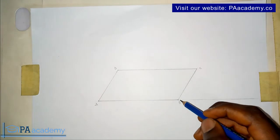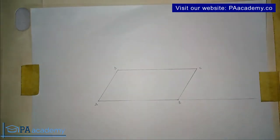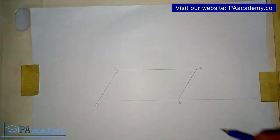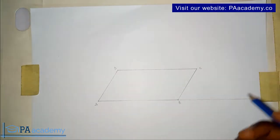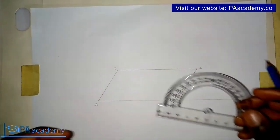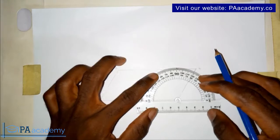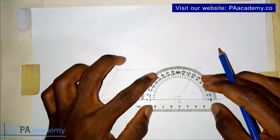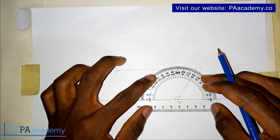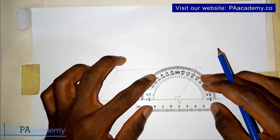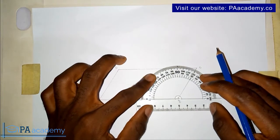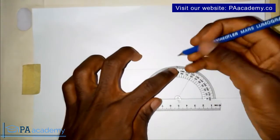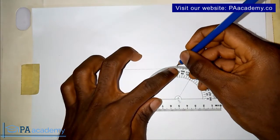At point B we are going to draw a perpendicular line — a line straight up at 90 degrees to line AB. I'll be using my protractor to do that, placing it on point B. This is 90 degrees.